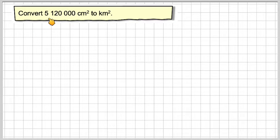Hi, in this video we're going to convert 5,120,000 centimeters squared into kilometers squared.